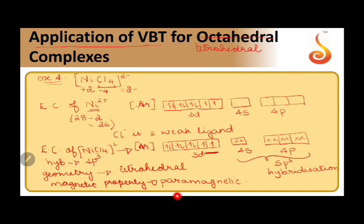Electronic configuration of Ni2+, electronic configuration of the complex, hybridization, geometry and magnetic property should be written in our answer when we are writing a PU paper. This is application of valence bond theory for tetrahedral complex when we took this example of [NiCl4]2-.